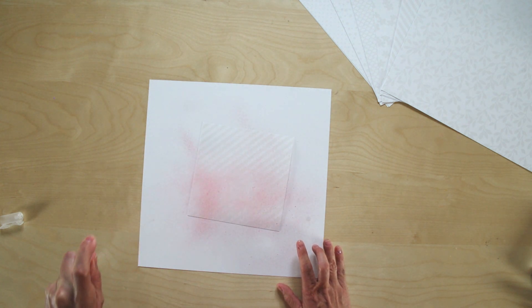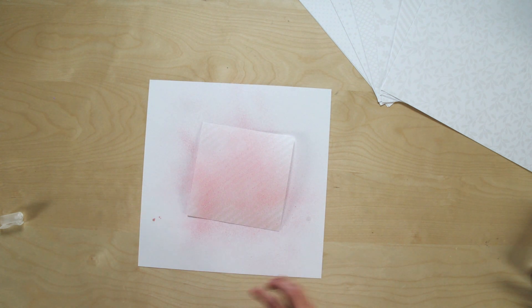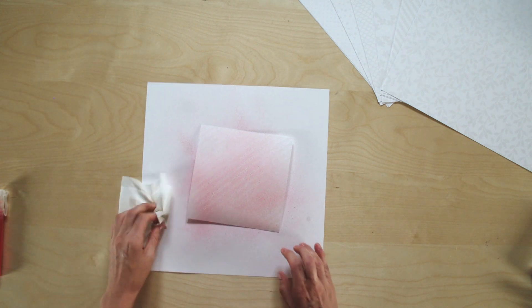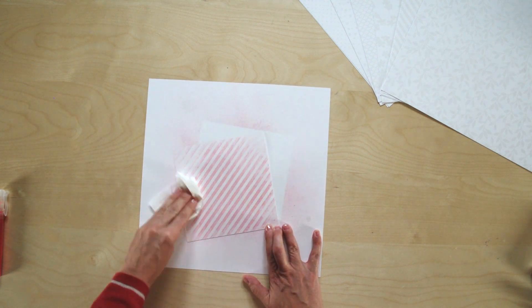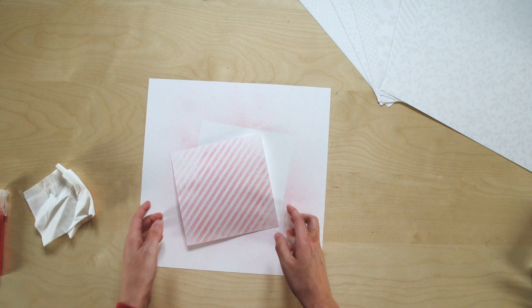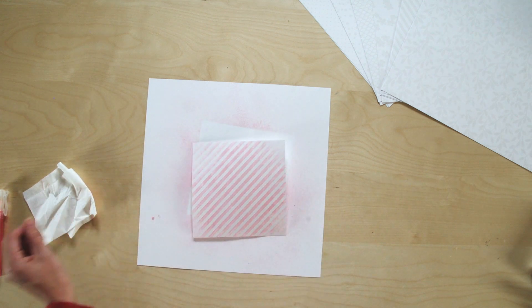Now this paper isn't designed to take a lot of moisture, so just use a light touch with it. Then you can use your tissue and just wipe off the excess, and look at what a fun look you get with that spritzed paper there.